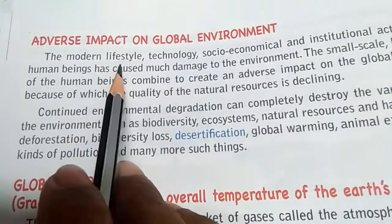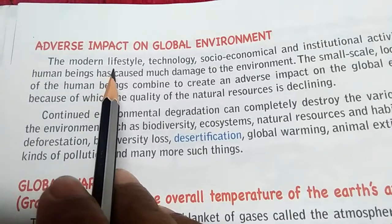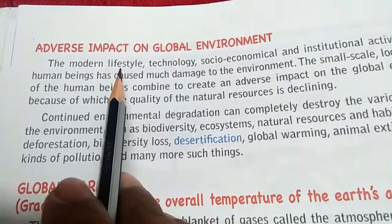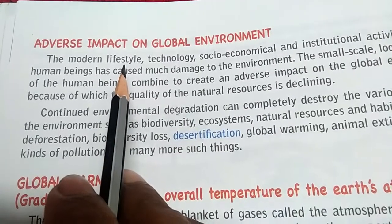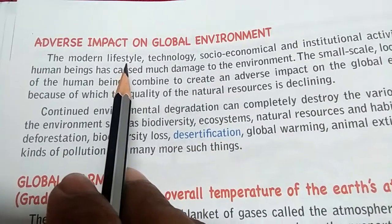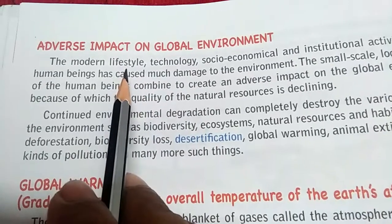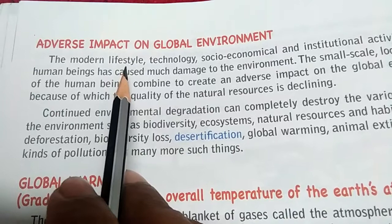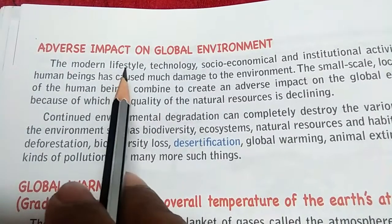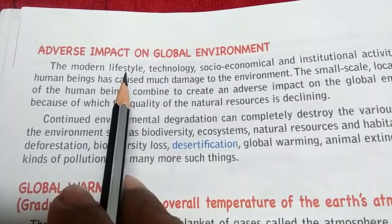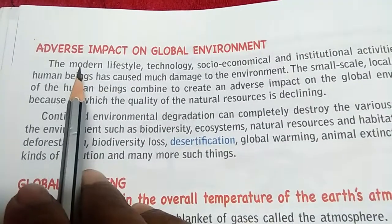The modern lifestyle. Nowadays our lifestyle has changed and it has become modern — we are living a very comfortable life. For example, if it is winter and very cold, we can use a heater, a geyser, or we can burn coal or firewood for heat. If it is summer, we use air conditioning or coolers. Coolers are okay, but air conditioning is not very good from an environmental point of view. We also have different varieties of food, vehicles, and a number of factories. In this way our lifestyle has become modern.